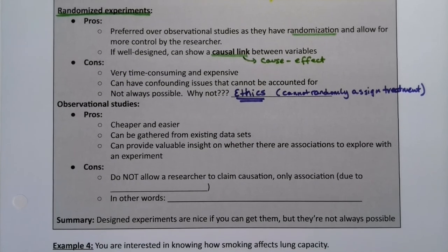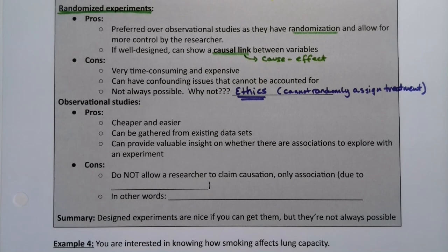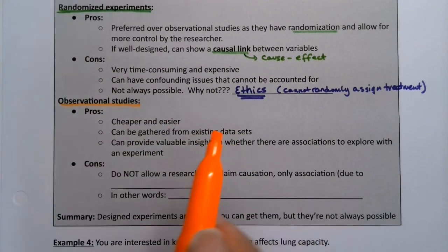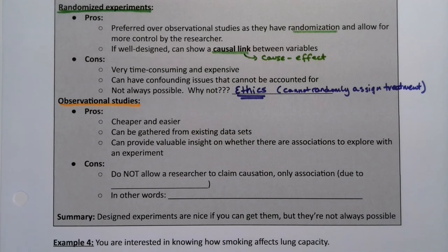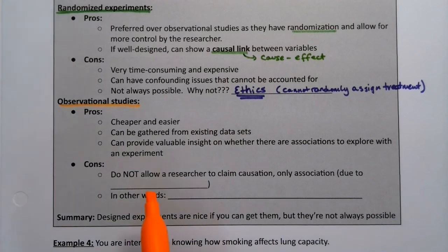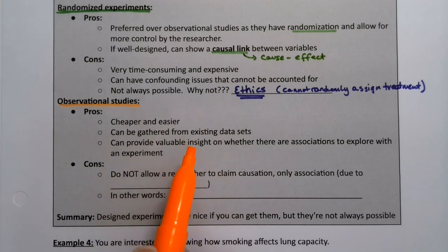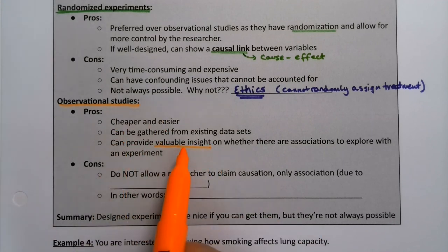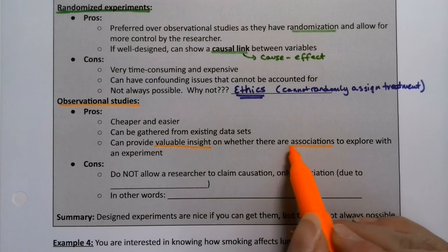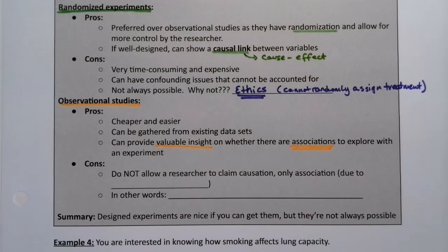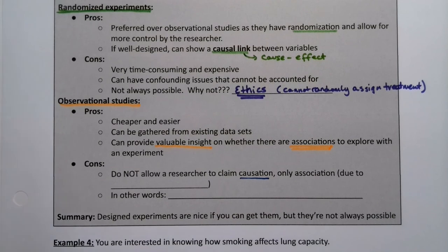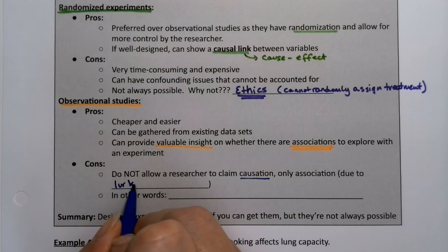An observational study is cheaper and easier. You can gather from existing data sets, which is lovely — you can just go scrape data off a website or government website. It can provide valuable insight, so don't think that just because they're cheaper and easier that they're not valuable. However, you can only explore associations, not cause and effect. You cannot claim causation — causation can only be claimed with an experiment. You can only claim association due to lurking variables.